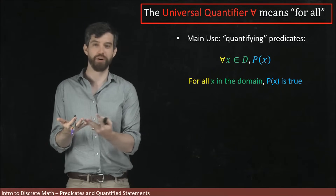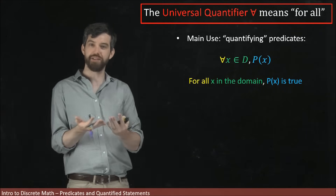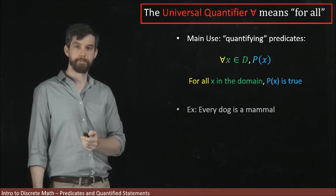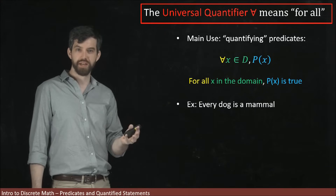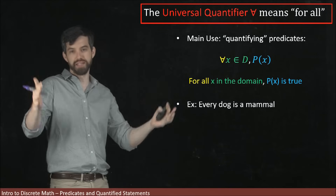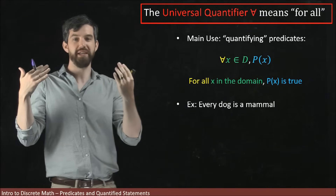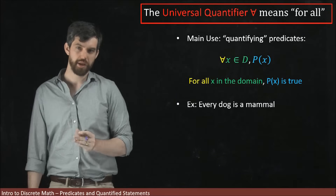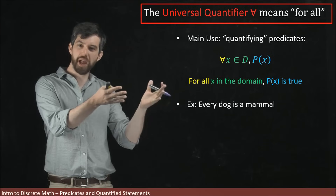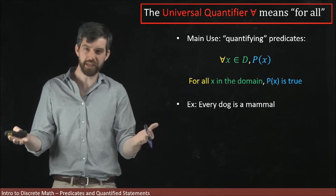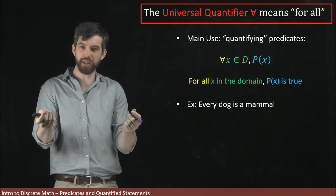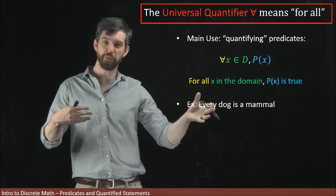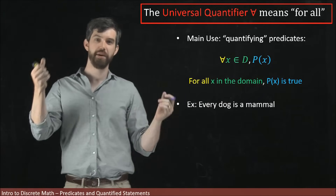The previous example we were looking at — the factors of 12 — that wasn't the case; it was only a subset of the domain, so not all of them were true. But sometimes it will be. For instance, let's look at the familiar statement 'every dog is a mammal.' Built into the very definition of what a dog is, part of its definition, is that a dog is going to be a mammal. Let's try to break this sentence down in terms of our language: for all X in D, P of X.